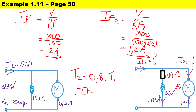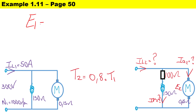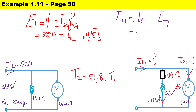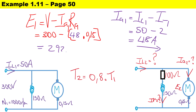I_field2 has decreased in order to increase the speed. The next step is to calculate E1. For a shunt motor, E1 equals V minus I_a1 times R_a. The supply current is 50 amperes and the original field current is 2 amperes, so the primary armature current I_a1 equals 50 minus 2, which is 48 amperes. Therefore E1 equals 300 minus 48 times 0.15, giving E1 equals 292.8 volts.